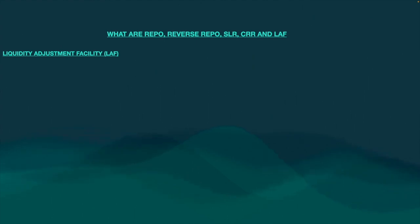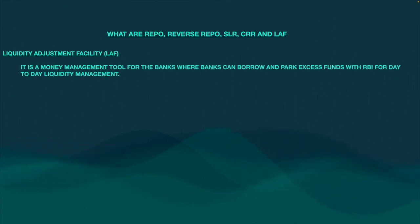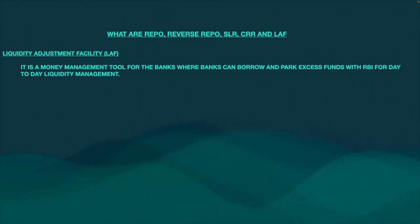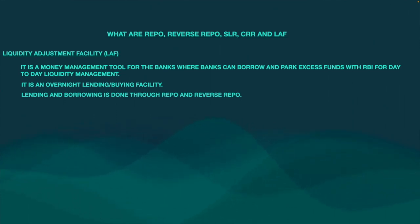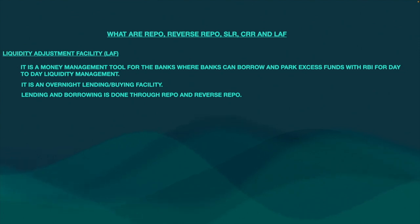Now coming to Liquidity Adjustment Facility, LAF. It is a money management tool for banks where banks can borrow and park excess funds with RBI for day-to-day liquidity management. It is an overnight lending and borrowing facility, not for long periods. Lending and borrowing is done through repo and reverse repo. If the RBI is lending money, the bank has to pay the existing repo rate. If the bank deposits money with the RBI overnight, the reverse repo rate is the rate at which RBI will pay interest for that amount.